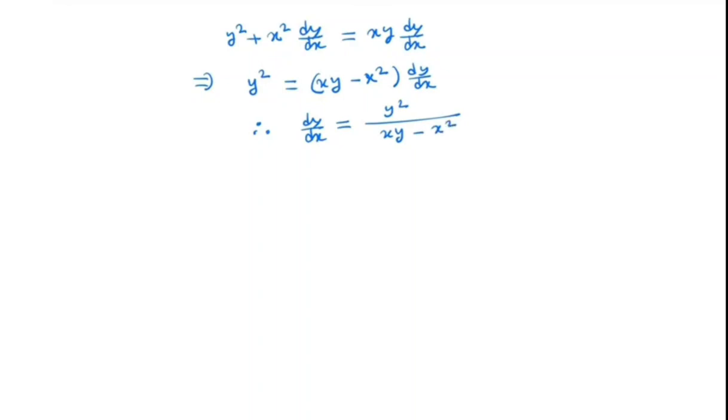So note that this is a homogeneous equation because in the numerator we have degree 2. In the denominator also this function x y minus x squared has degree 2 because each term x y and x squared has degree 2.